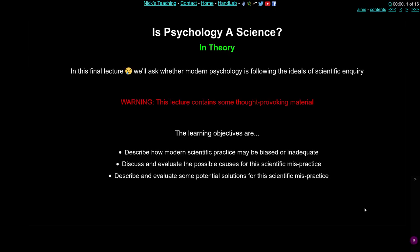In the previous lecture you looked at the philosophy of science and how, in theory at least, psychology should proceed — testing hypotheses, trying to confirm or falsify them. You looked at some of the ideals of how science is done. In this final lecture we're going to ask whether modern psychology really does follow those ideals of scientific inquiry and can we look at modern psychology as a good example of scientific inquiry.